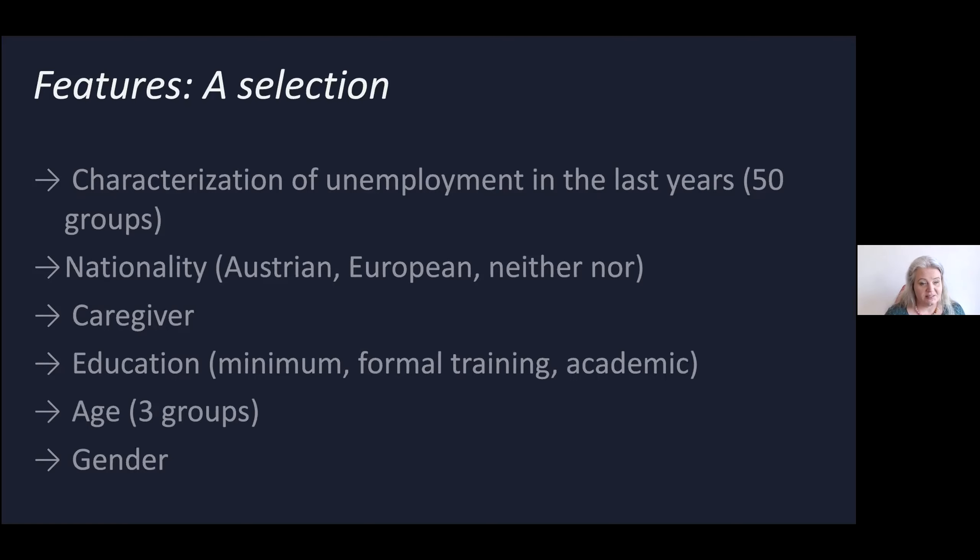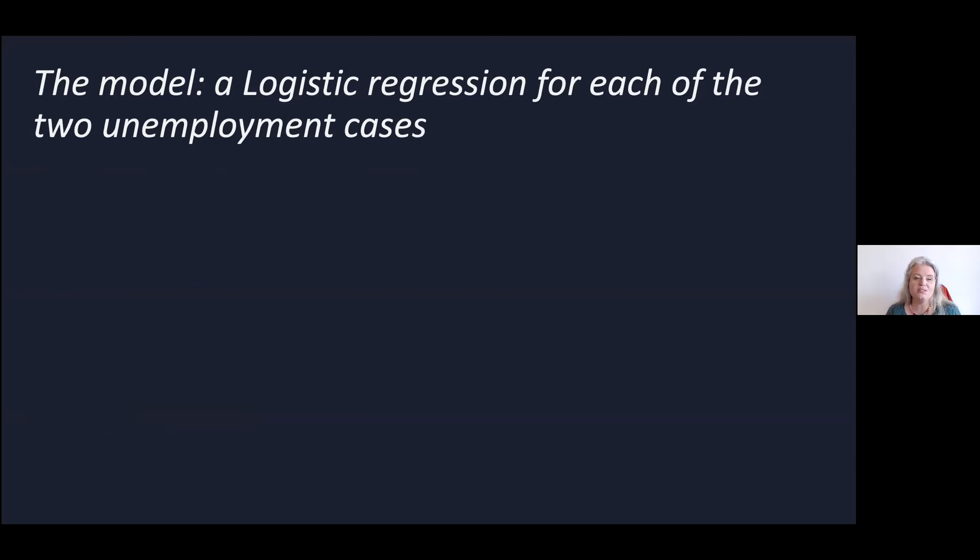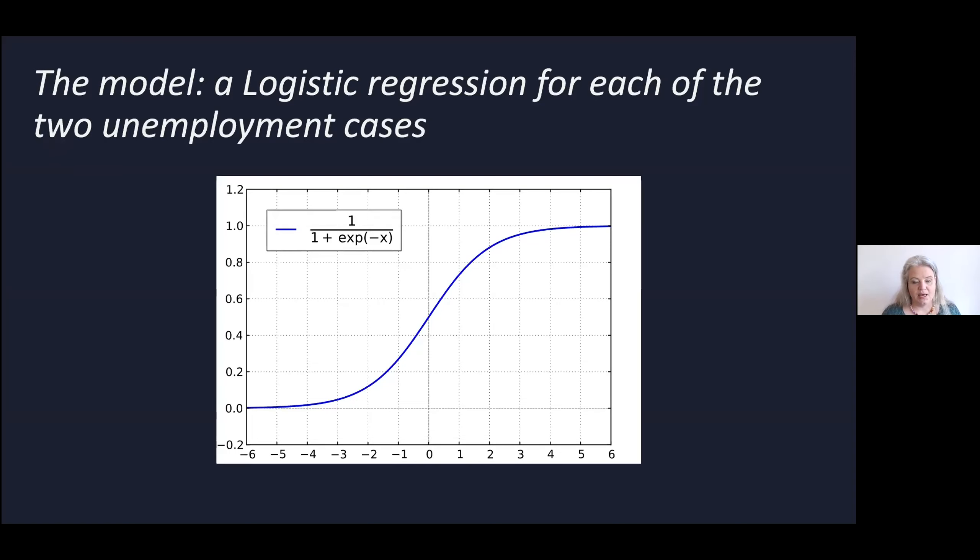With that they trained a statistical model. As data scientists, we have a lot of freedom to make design decisions, and that is such a design decision: which model you take and to which model you fit the data. In this case, they took something called a logistic regression. They trained two models: one to understand whether a person is very likely to be easily employable, and another to understand whether a person is very unlikely to be employed in the next few years.